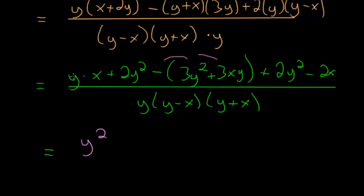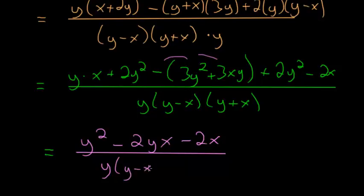And then here we have a y times x. And then here we have 3 times y times x. But inside, we're subtracting this. So yx minus 3yx is the same thing as minus 2yx. And then all we're left with is just this minus 2x. And then it's still all divided by that common denominator, y times y minus x times y plus x.